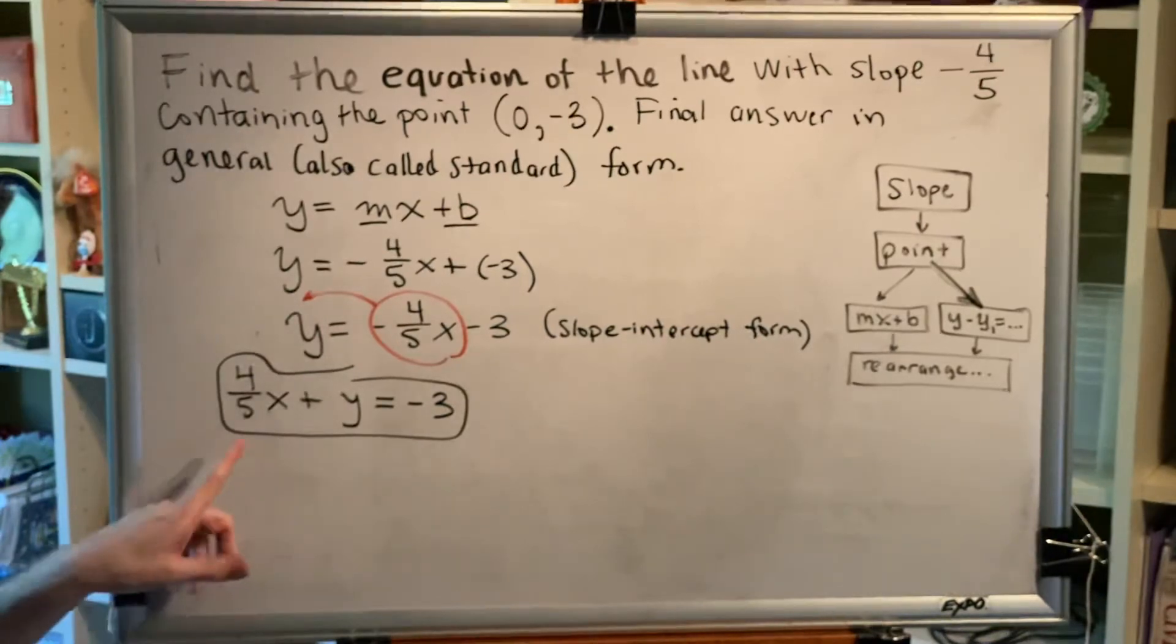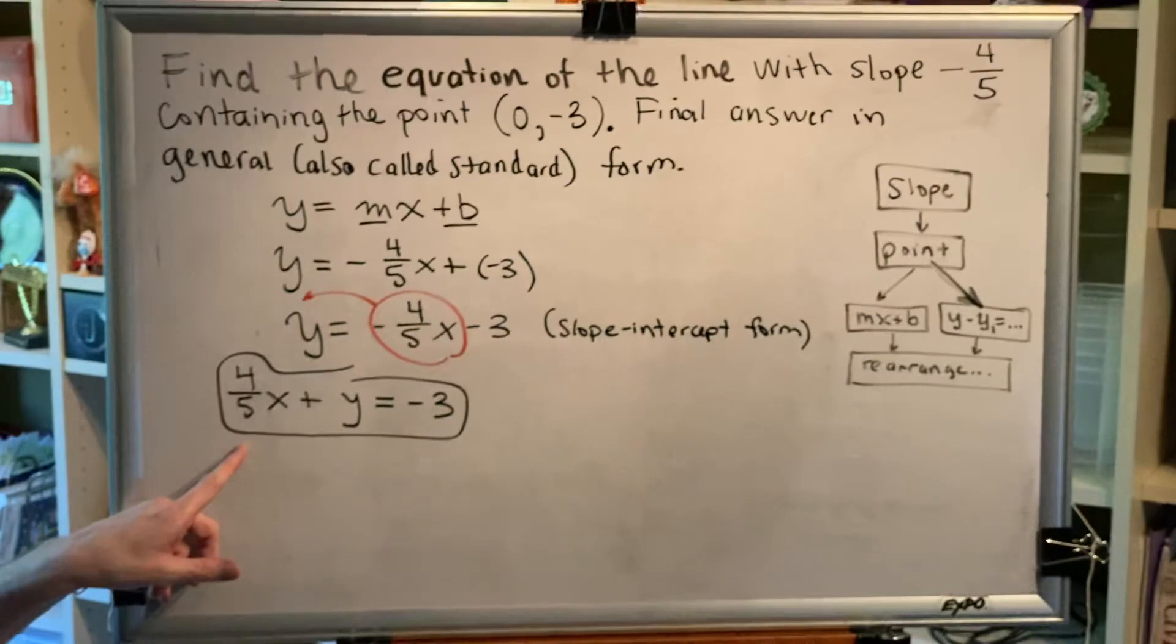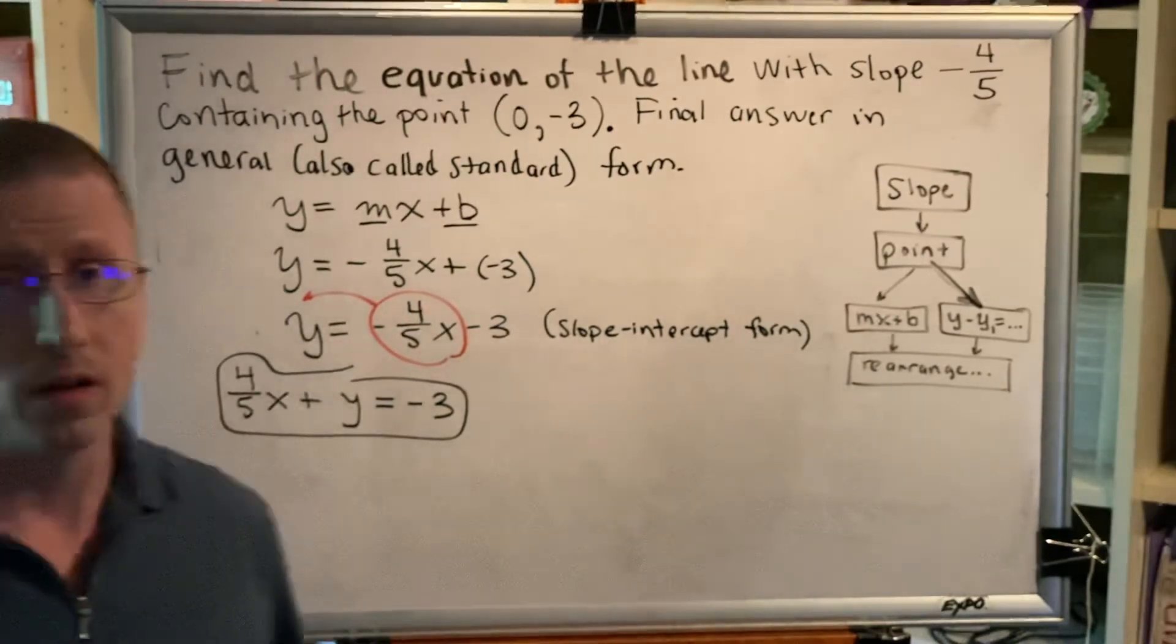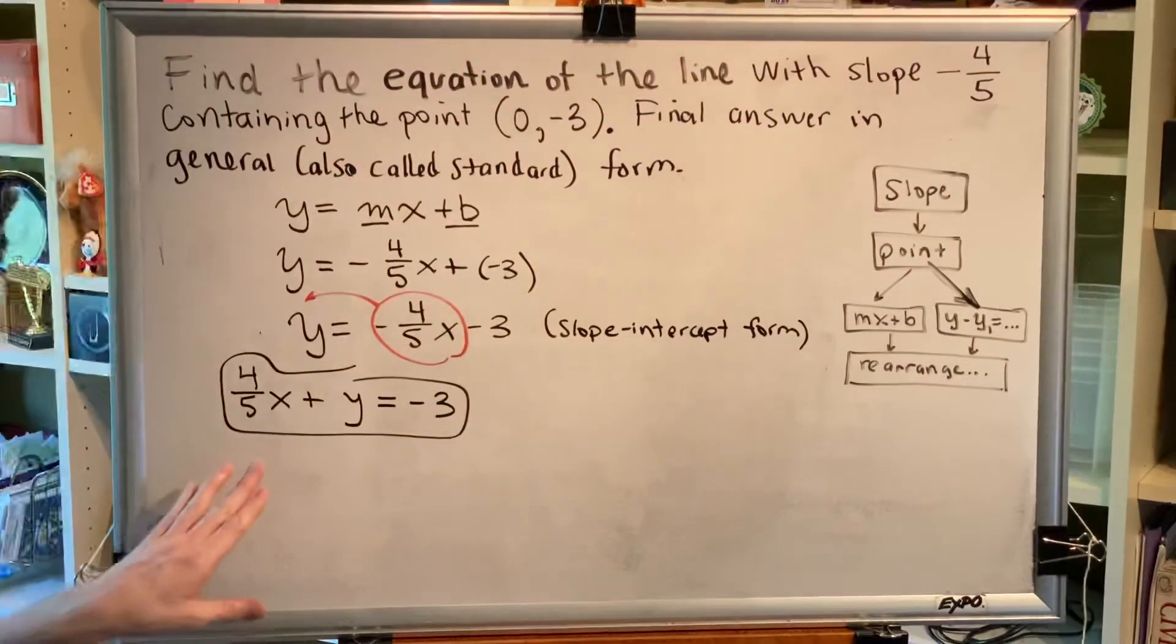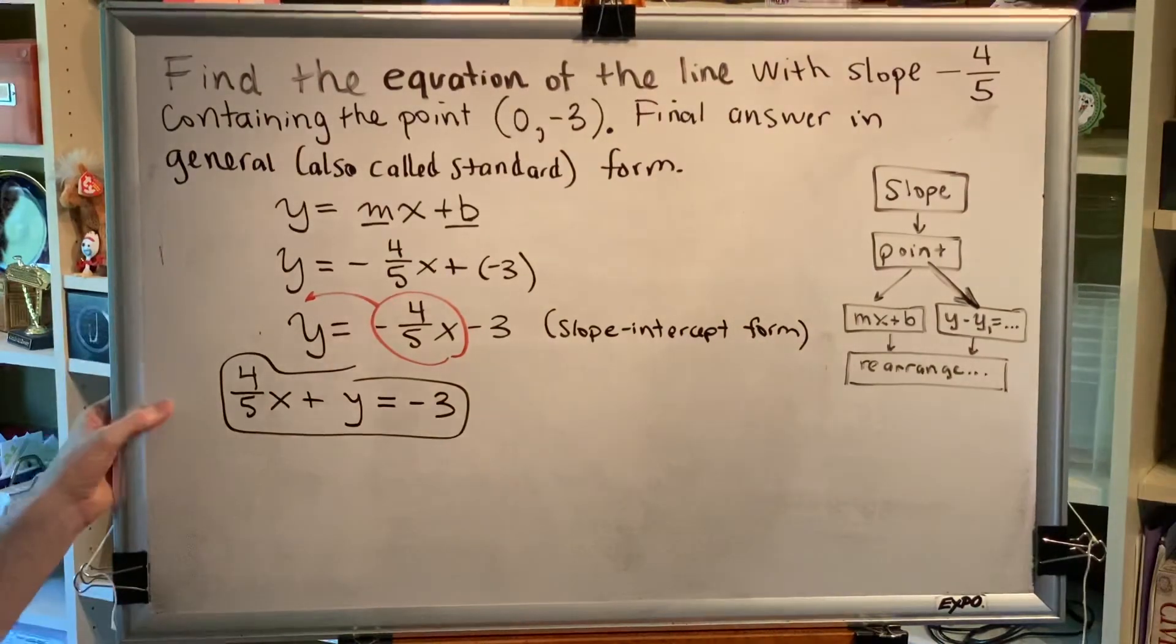Now, in some textbooks, they require you to have a leading coefficient of your first variable term, in other words, a of one. The book we are using does not require that, and therefore we are going to leave this as our final answer.